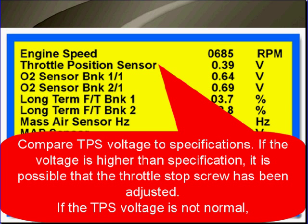Compare TPS voltage to specifications. If the voltage is higher than specifications, it is possible that the throttle stop screw has been adjusted and you need to take care of that. If the TPS voltage is not normal, test the TPS and its circuits.